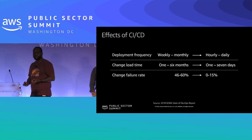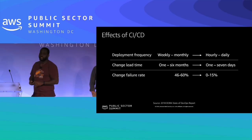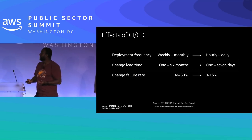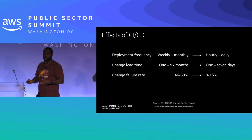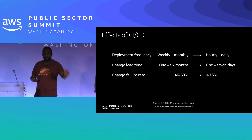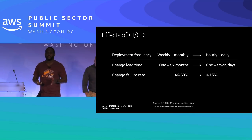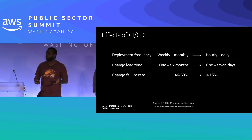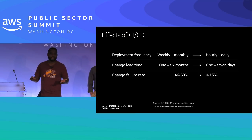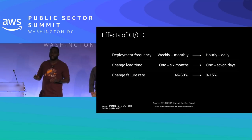After implementing CICD you'd expect to see deployment frequency increase — organizations go from weekly or monthly deployments to daily or even hourly. Change lead time, the time from idea to implementation, also reduces. The change failure rate — how many changes result in broken functionality or security violations — can reduce from 46% down to around 15%. This is a continuum and a journey that requires effort to see these rewards.